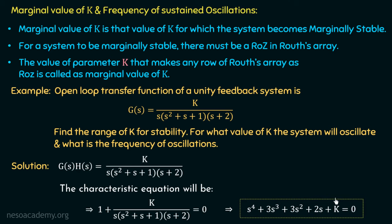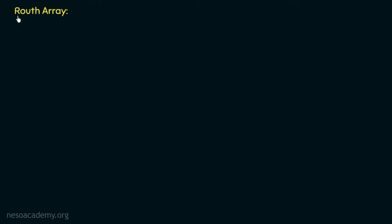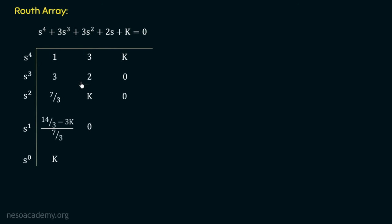Moving on to draw the Routh array for the characteristic equation s⁴ + 3s³ + 3s² + 2s + k = 0. The array is already drawn from the previous lecture. The highest power is s⁴ with coefficients 1, 3, 3, 2, k filled across the first two rows. The remaining term in the second row becomes 0 since no further coefficients remain.